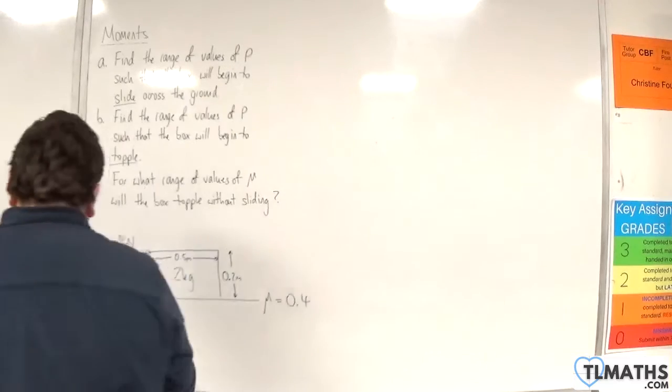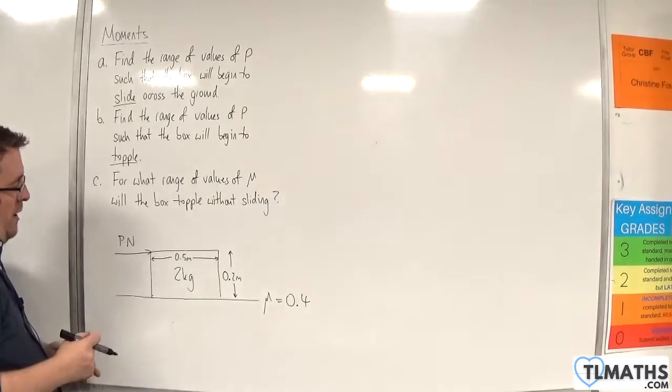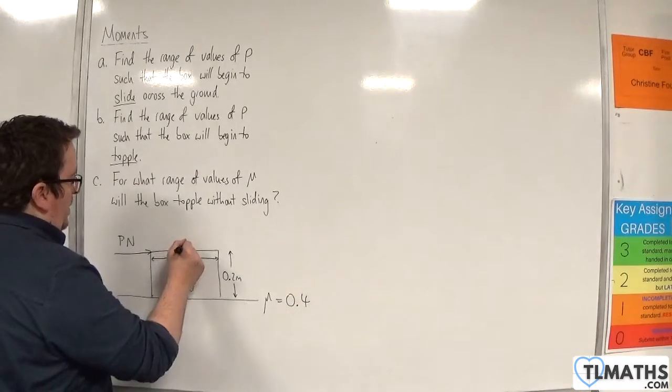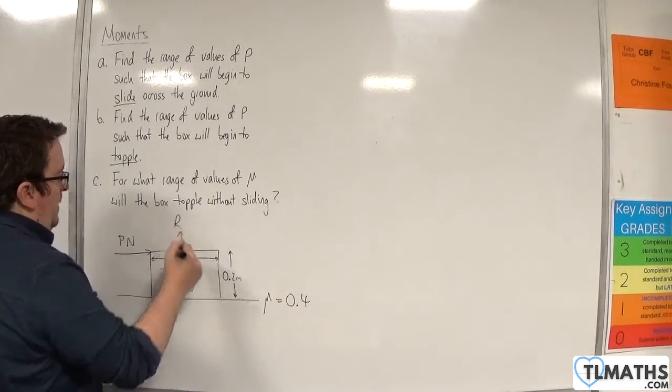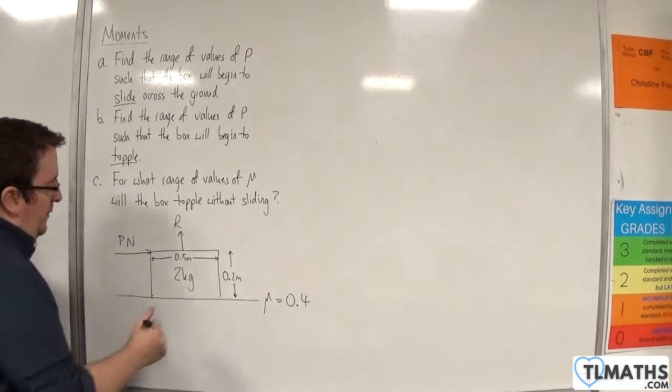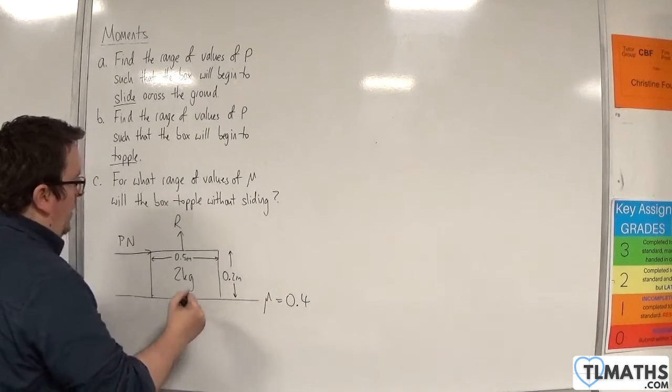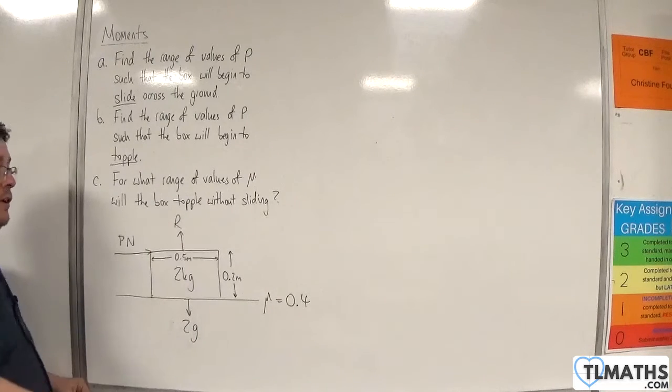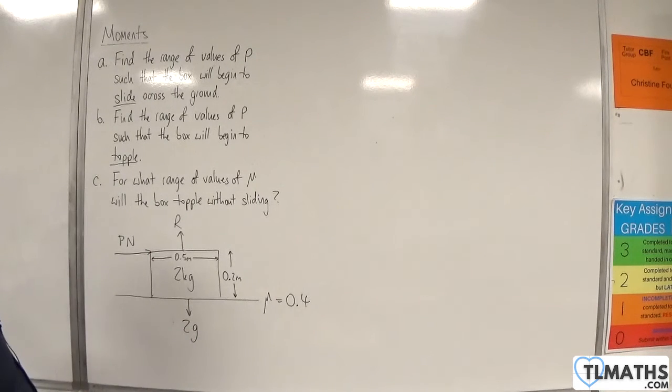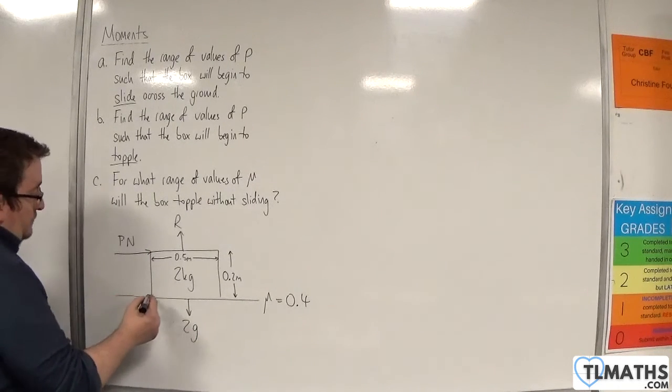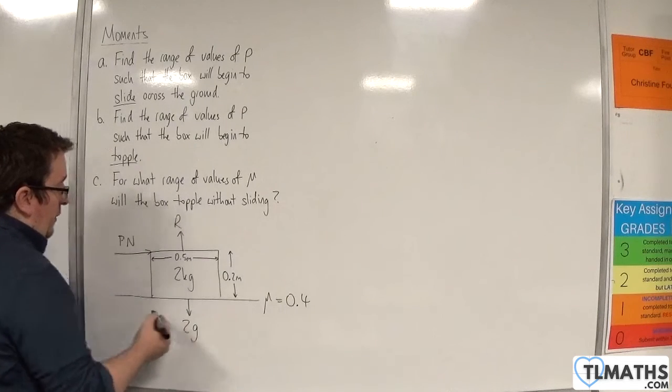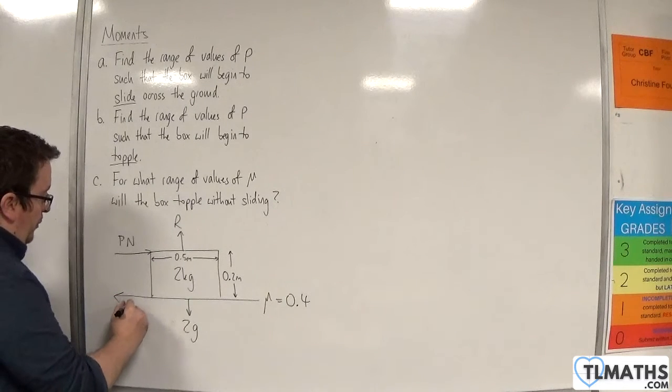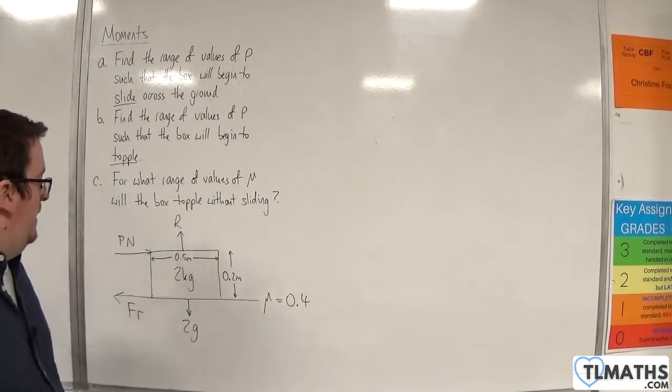Let's add in the forces that we're aware of here. There's going to be a normal reaction force because the box is in contact with the surface, and we have the weight working vertically downwards, which will be 2g. I'm modeling both of those as going through the center of the block. Because the surface is rough, there's going to be a frictional force working to the left, so I'll put that in as fr.